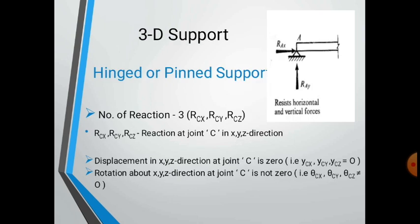For the hinge or pin support in 3D, the number of reactions generated is three: RC x, RC y, and RC z along each coordinate axis. The displacement at joint C is zero — that is, delta C x, delta C y, and delta C z are zero — but the rotation at joint C is not zero, so theta C x, theta C y, and theta C z are not equal to zero, because it can rotate about the joint.